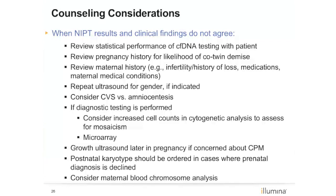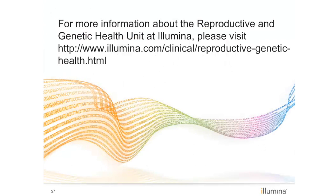In summary, there are many counseling considerations to be taken into account when NIPT results appear discordant. Statistical test performance parameters are important to review, as is a complete pregnancy and medical history looking for information about co-twin demise and detailed maternal medical history. When invasive testing is recommended, it is important to have a discussion about CVS versus amnio, extra counts to rule out mosaicism, and inclusion of microarray with standard karyotype. Consideration of maternal chromosomes and serial ultrasounds in pregnancy are also important. This concludes this module of non-invasive prenatal testing: background, science, and clinical implementation. Thank you.